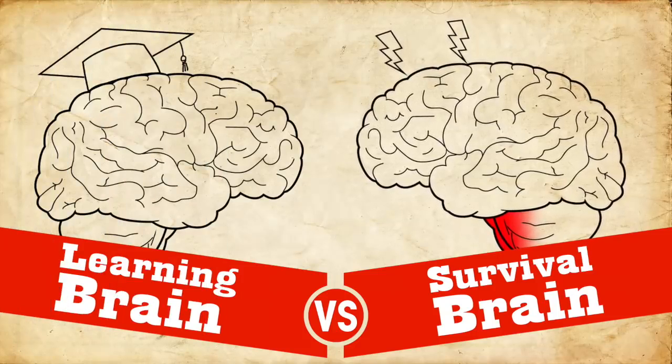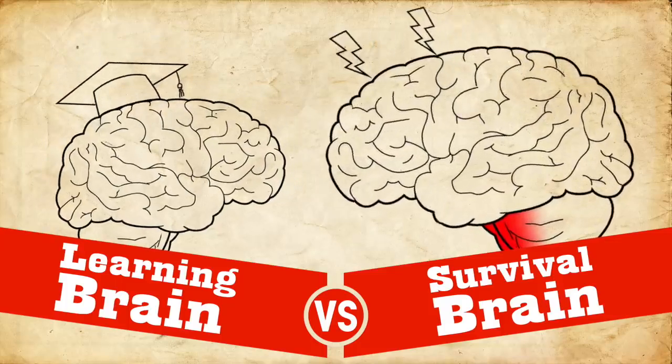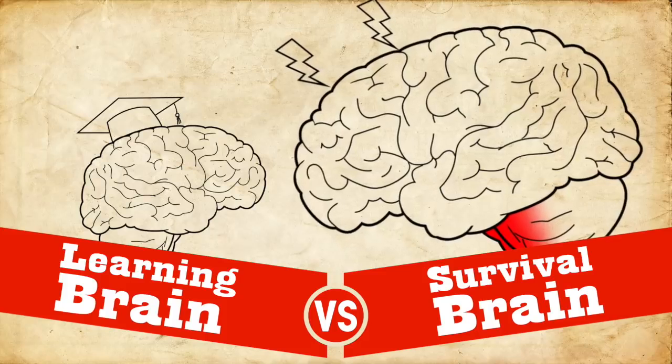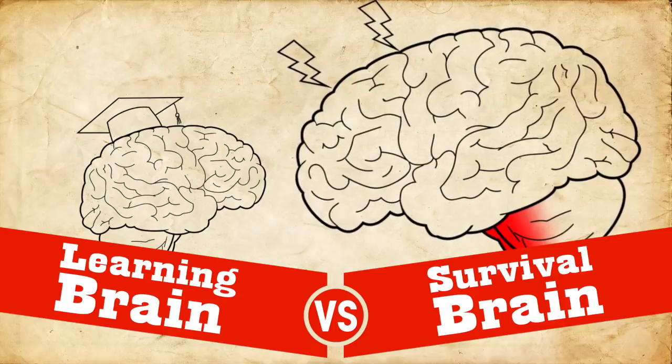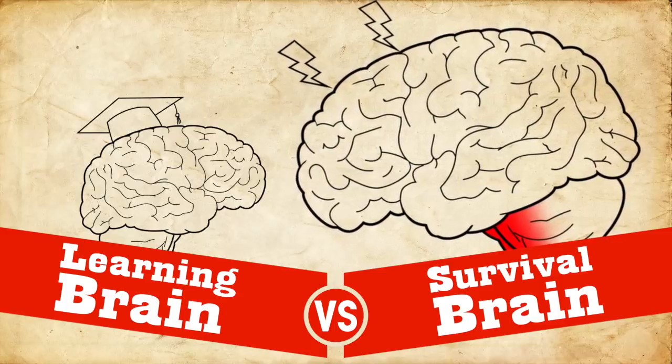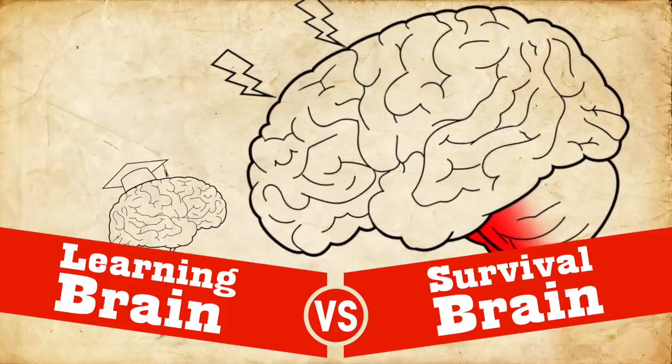Now it's really important to understand how learning brain and survival brain interact. Because survival brain always trumps learning brain. And it makes sense because survival brain is just trying to save your life. And so if it thinks that there's something dangerous happening, you better pay attention to it, right? But the tricky thing is that as survival brain stays on longer and longer, it's harder to get out of that. And it's harder to really go into learning brain.